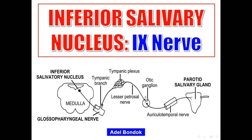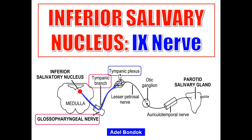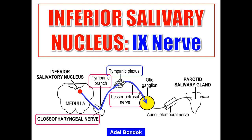The parasympathetic pathway to the parotid gland: origin in the inferior salivatory nucleus, fibers enter the glossopharyngeal nerve, leave via the tympanic branch, form the tympanic plexus, from which arises the lesser petrosal nerve, which synapses in the otic ganglion. From the otic ganglion, postganglionic fibers reach the parotid gland via the auriculotemporal nerve.